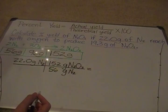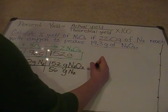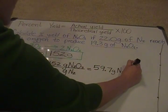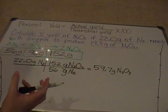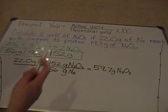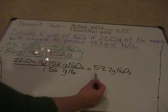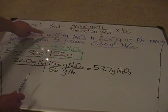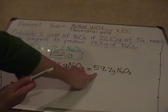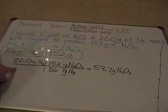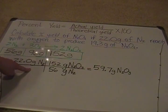So we calculate: 22.0 × 152 ÷ 56, rounded to three significant figures to match our given value of 22.0. This gives us 59.7 grams of N2O3. But this is not our final answer — we have not yet calculated percent yield, which is what the question asked for. What we've calculated is the theoretical amount of N2O3 we should expect to get as a product if we start with 22 grams of nitrogen and an excess of oxygen.